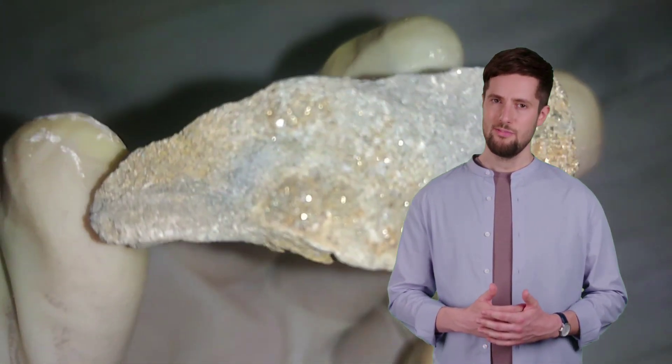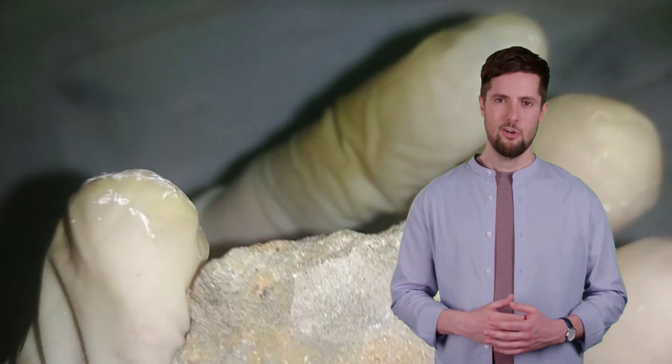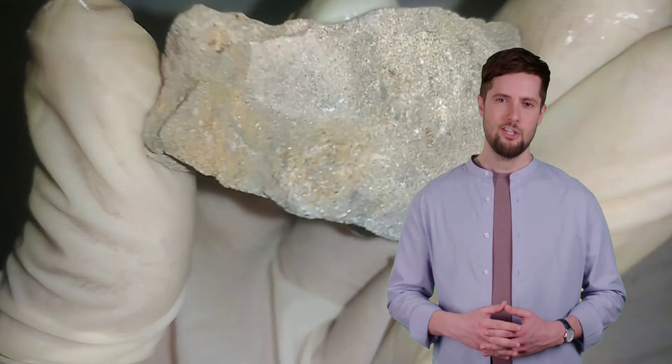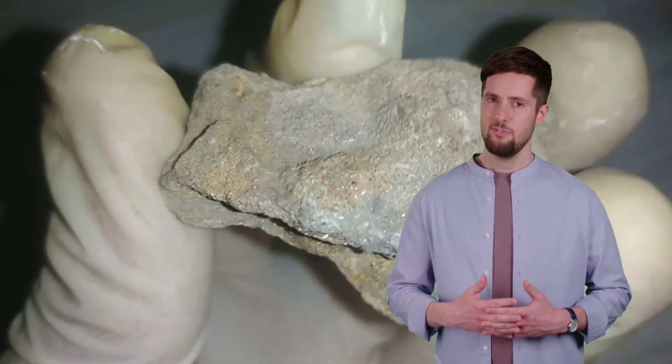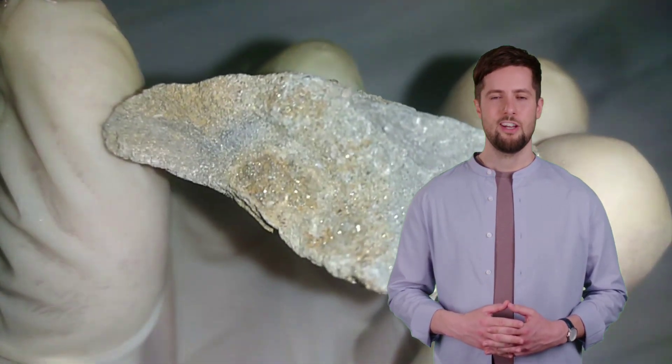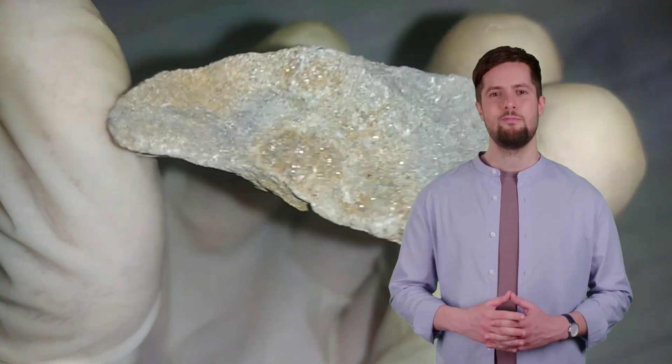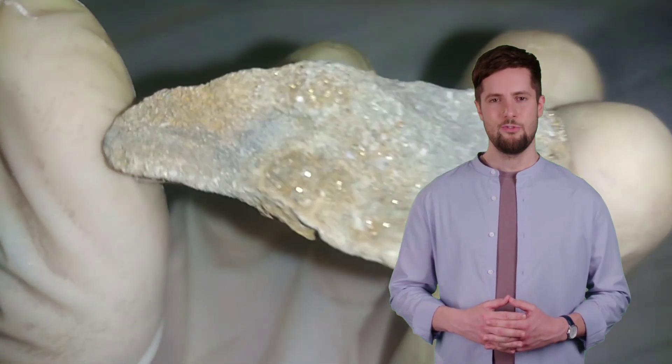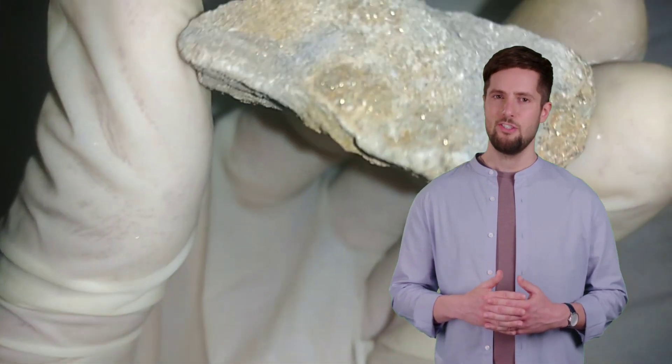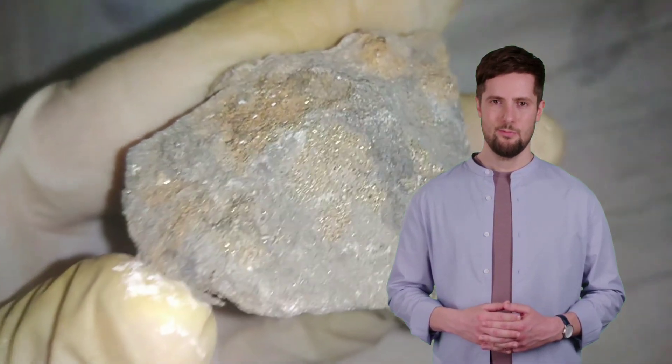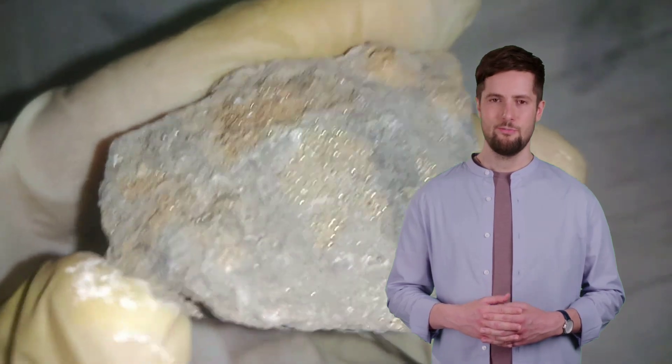After crushing and grinding, the gold-bearing rocks are subjected to gravity separation. This process takes advantage of the density difference between gold and the surrounding rock material. Gold is much denser than most other minerals found in rocks. Techniques like panning, sluicing, and shaking tables are used to separate gold from the crushed rock particles based on their weight.